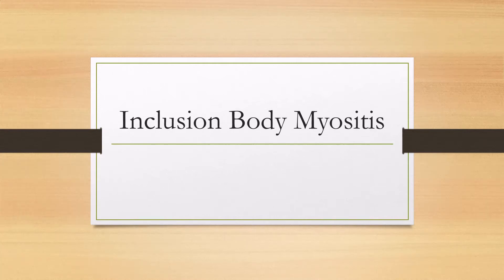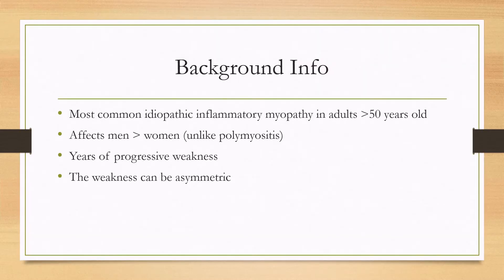Let's talk about inclusion body myositis. This is the most common idiopathic inflammatory myopathy in adults over 50 years old. It affects men more commonly than women, which is unlike polymyositis. Characteristically, there can be years of progressive weakness before it comes to the attention of either the patient or the physician, and this weakness can be more asymmetric than some of the other myopathies.